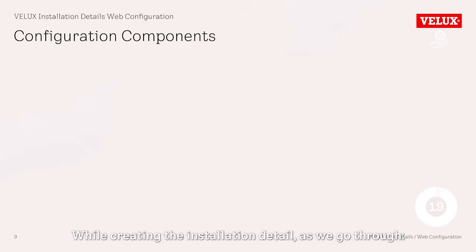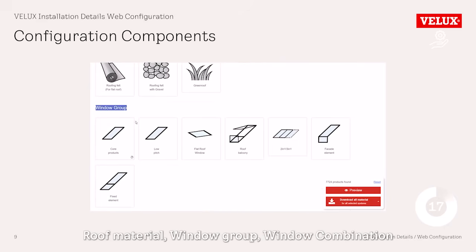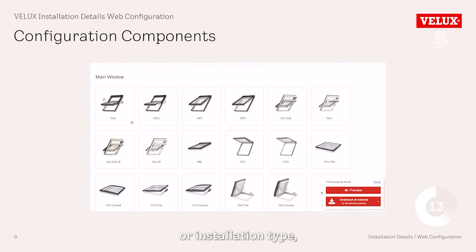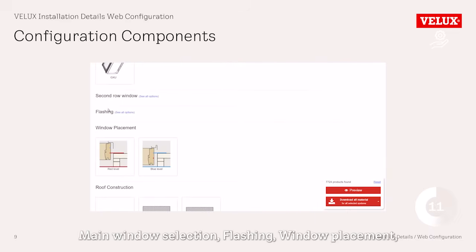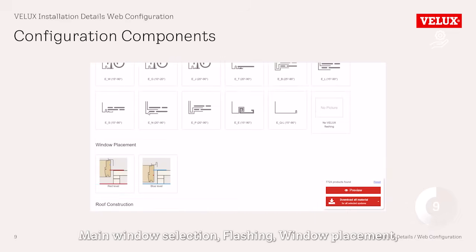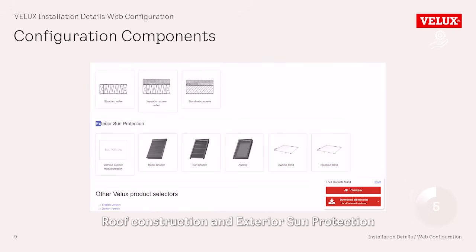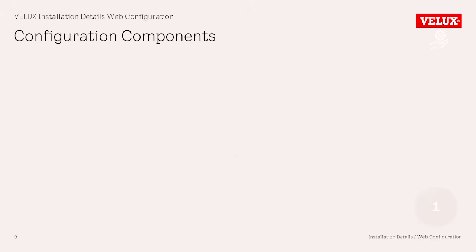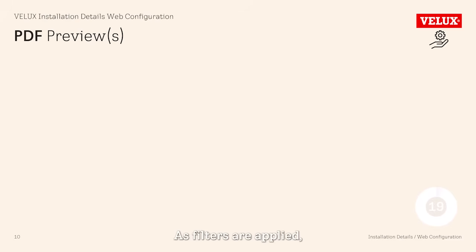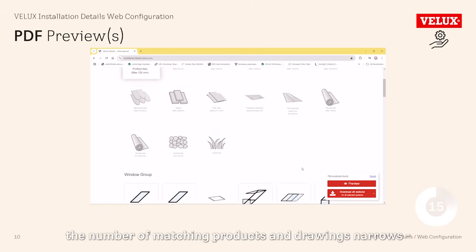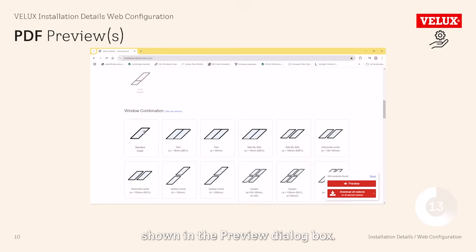While creating the installation detail, we go through roof material, window group, window combination or installation type, main window selection, flashing, window placement, roof construction, and exterior sun protection. As filters are applied, the number of matching products and drawings narrows, shown in the preview dialog box.